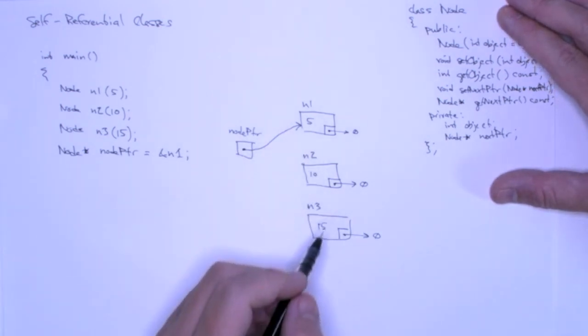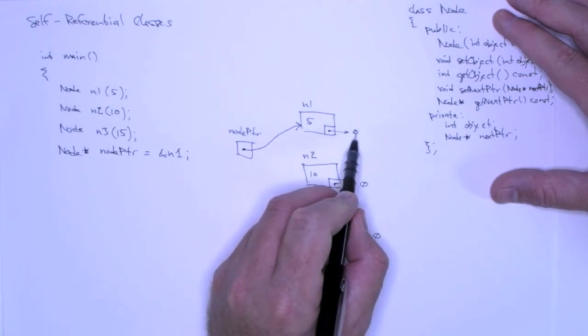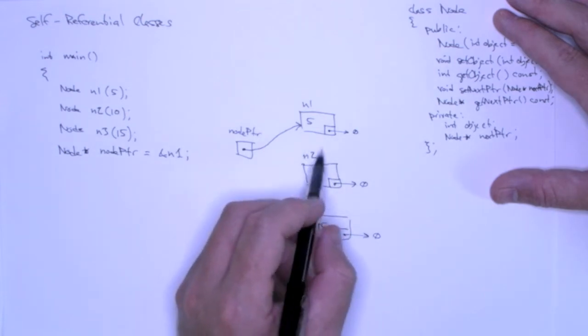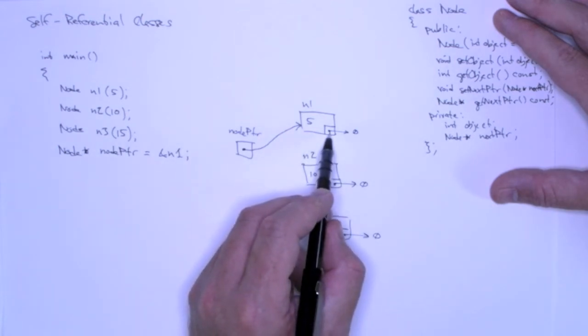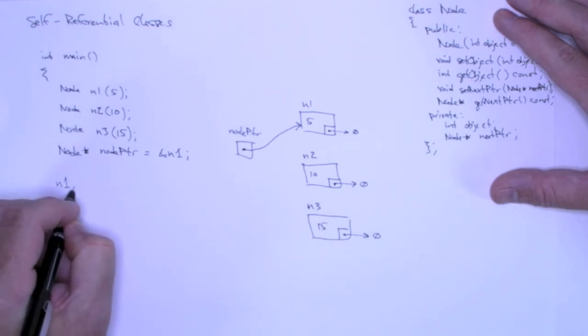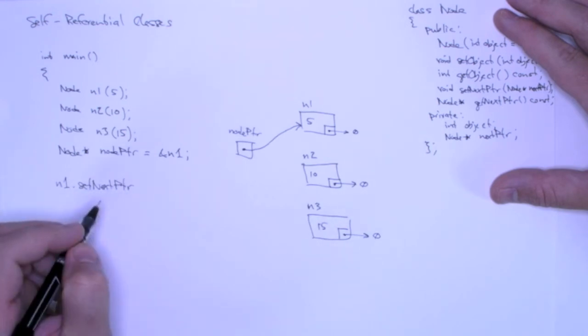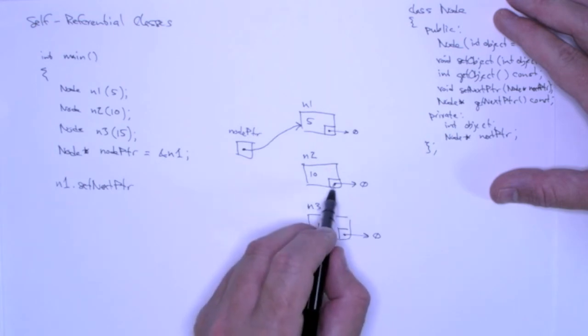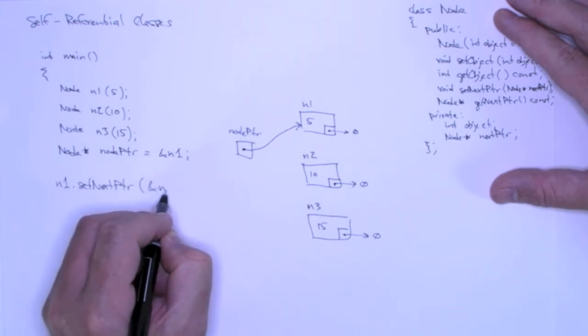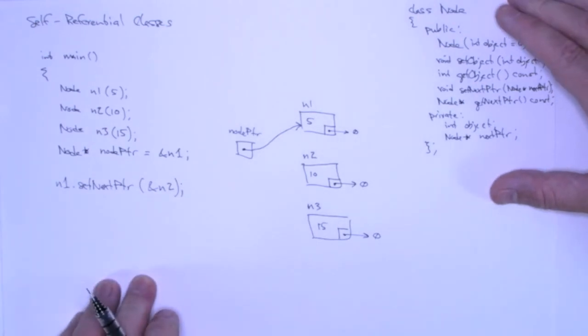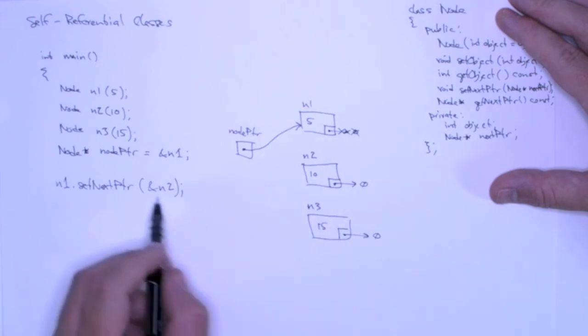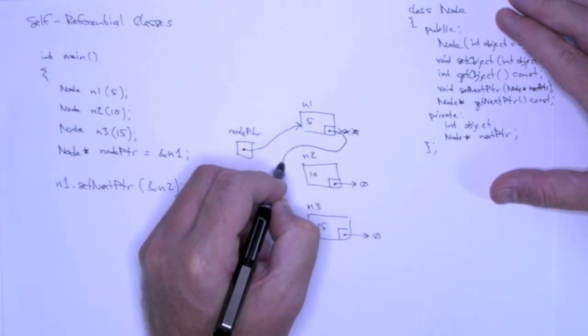Now what I want to do is link these up in order. And I want to make n1's next pointer point to n2 to create that chain. I can do that by simply passing in to the setNextPointer method of n1, n2's address. So I can say n1.setNextPointer, so that's going to set this next pointer, and I want to make it store n2's address. I want to point to n2, and I can do that by using the ampersand operator, or the address operator. What this is going to do is now this n1's object next pointer no longer points to null, it points to n2.